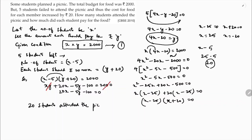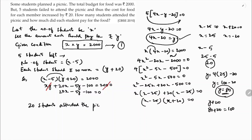Next, they're asking how much each student paid. Substituting x = 25 into y = 4x − 20: y = 4(25) − 20 = 100 − 20 = 80. But since each student is paying 20 rupees more, the actual amount is y + 20 = 80 + 20 = 100. So each student paid ₹100 for the food.